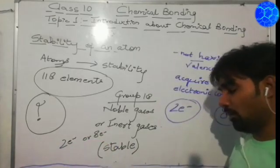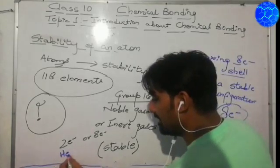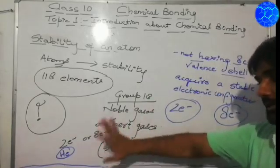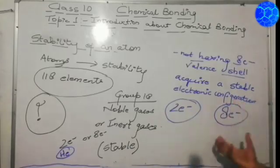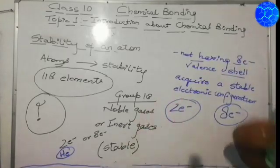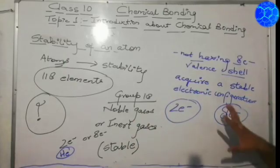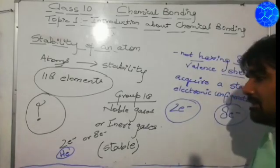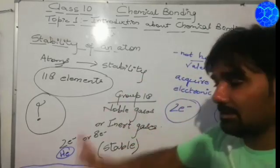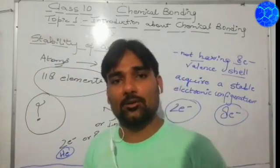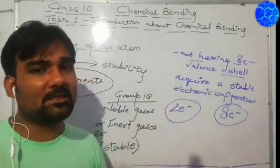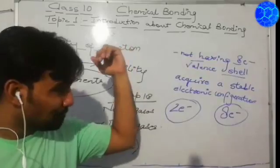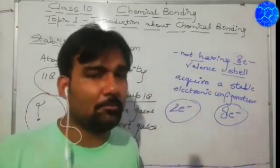Helium is only having two electrons in its outer shell while other elements of group 18 have eight electrons in the outer shell. So whichever element tries to become stable will try to attain two or eight electrons in the outer shell — becoming stable like its nearest noble gas.